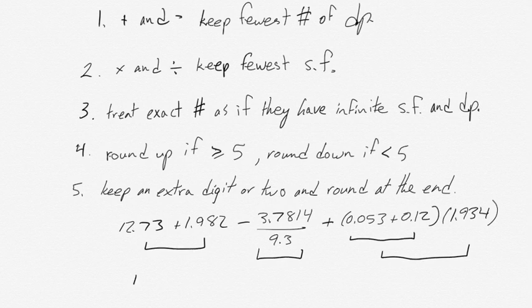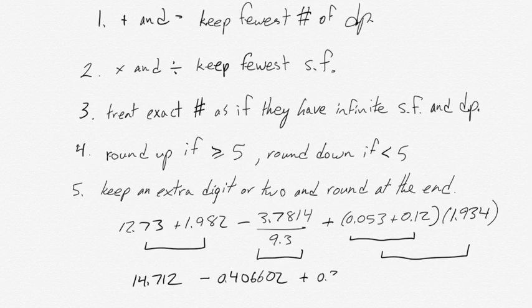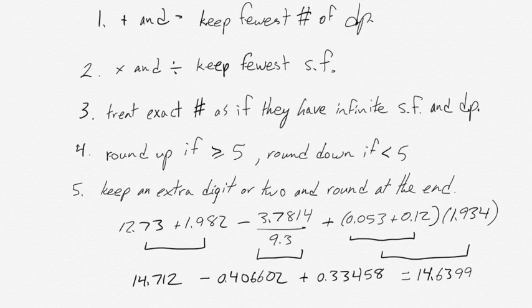For the first addition, we end up with 14.712. In each case, I'm going to be following rule number 5: keep an extra digit or two and round at the end. The second calculation, 3.7814 divided by 9.3, gives us 0.406602. The final addition, followed by a multiplication, gives us 0.33458. When you add these all together, you get 14.6399.